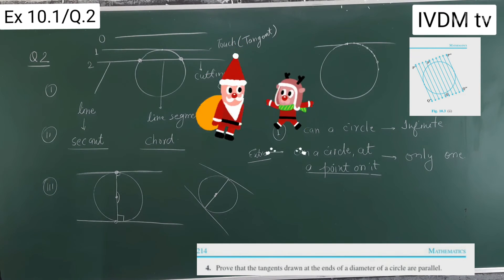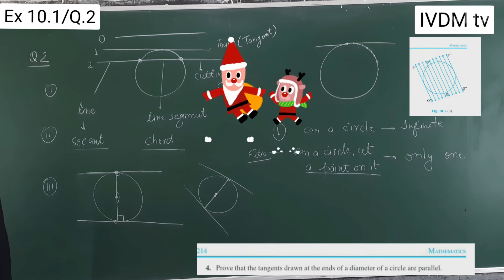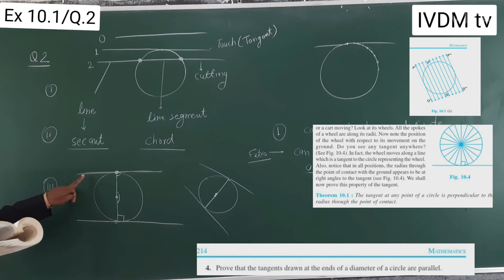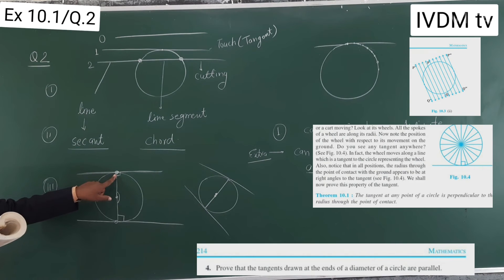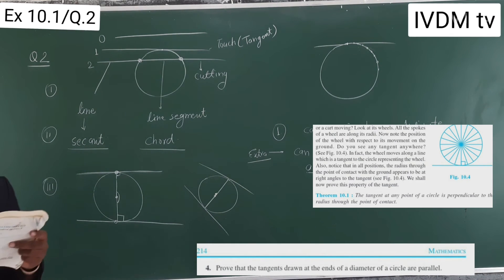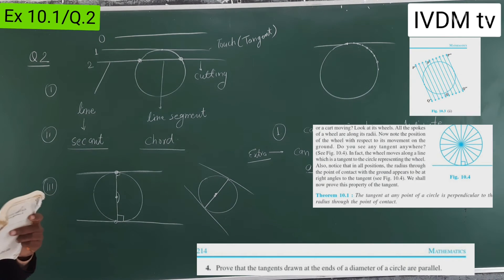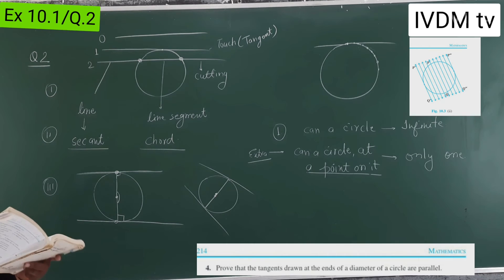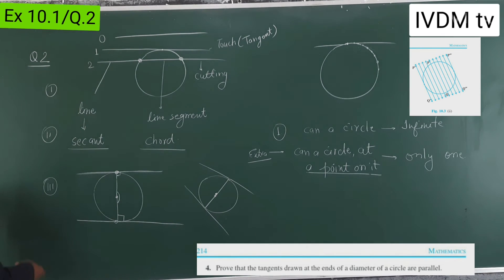Fourth number: the common point of a tangent to a circle and the circle — this point is called, on page number 208, the point of contact.